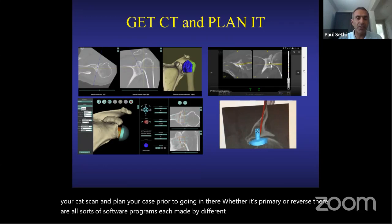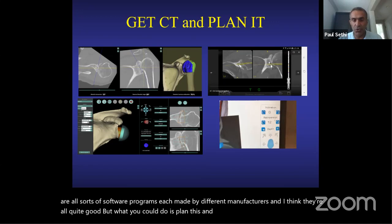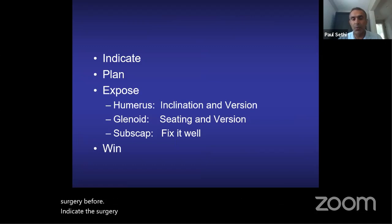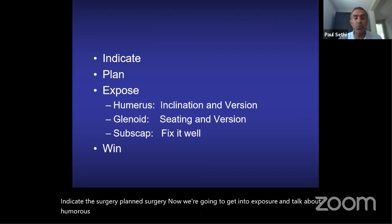Every case warrants planning. Get your CT scan and plan your case prior to going to the OR, whether it's a primary or reverse arthroplasty. There are software programs from various manufacturers — all quite good — that allow you to have a virtual answer for your surgery before you make an incision. Indicate well, plan well, then execute.